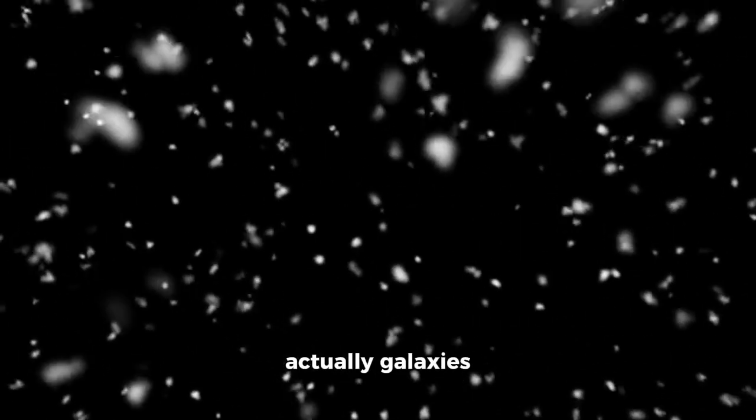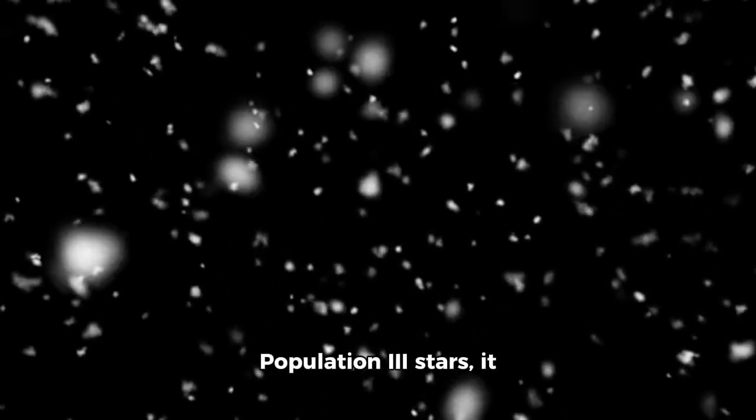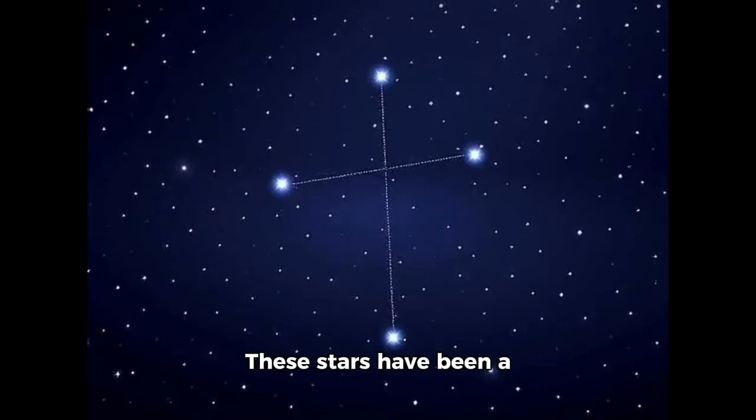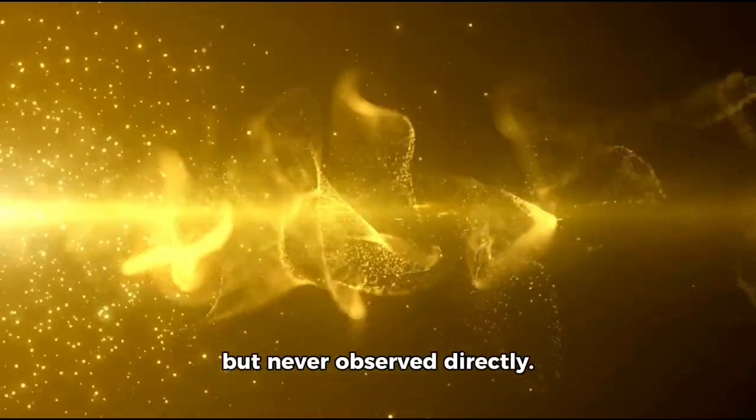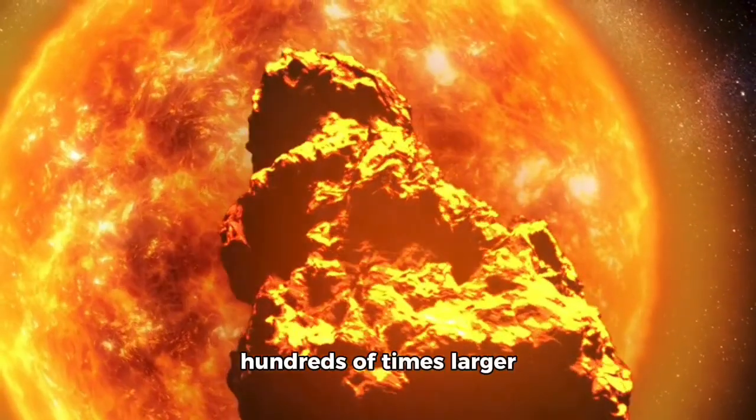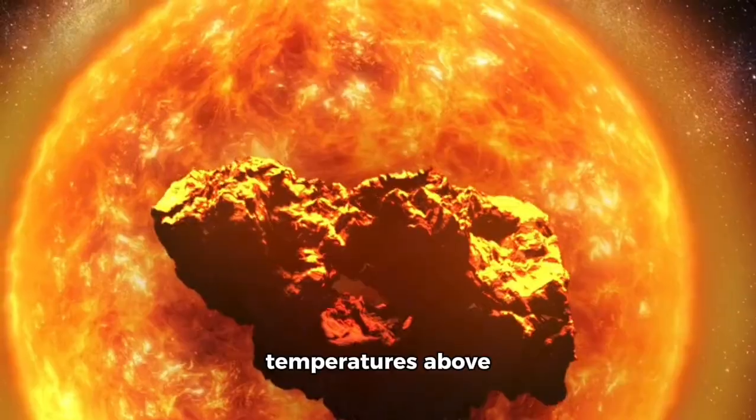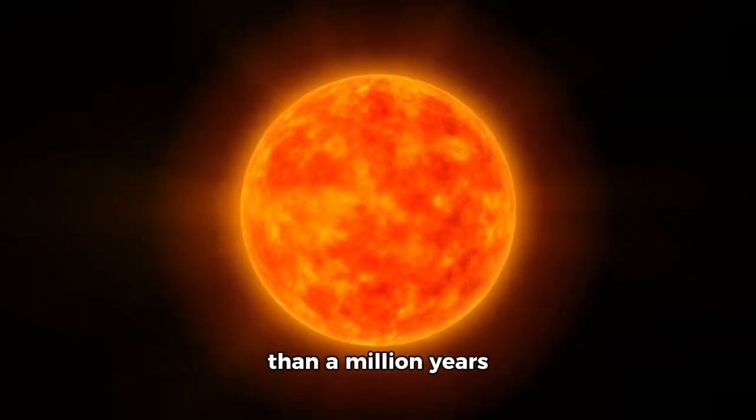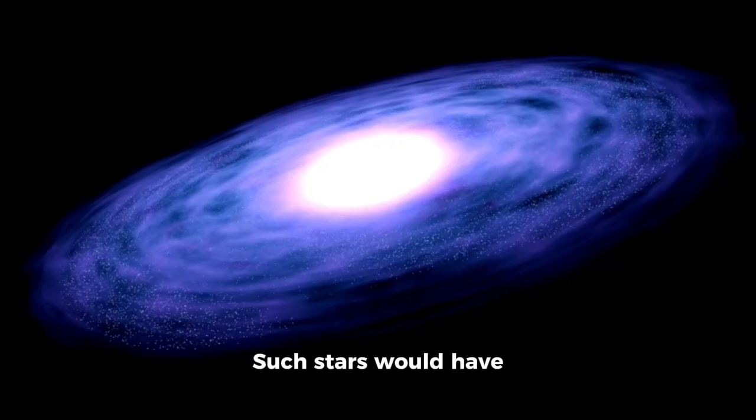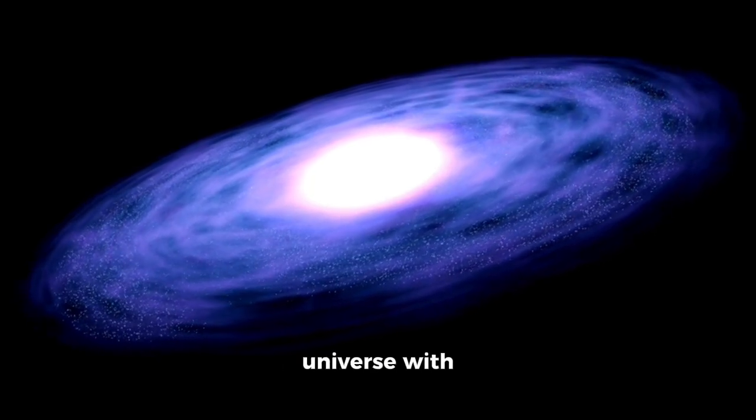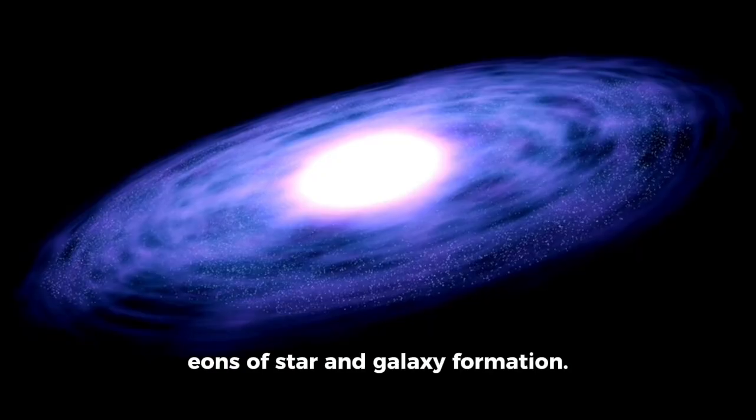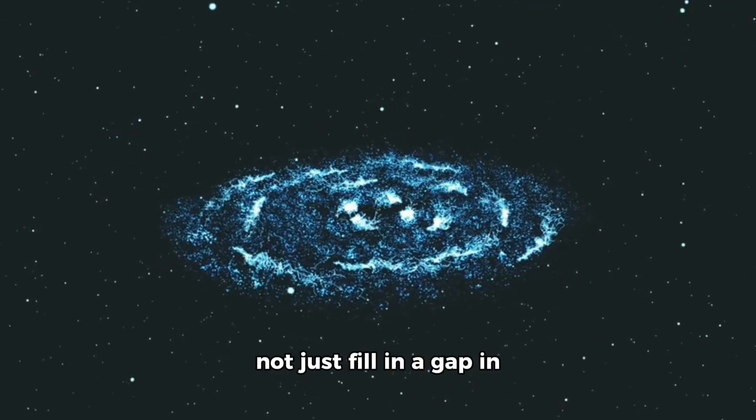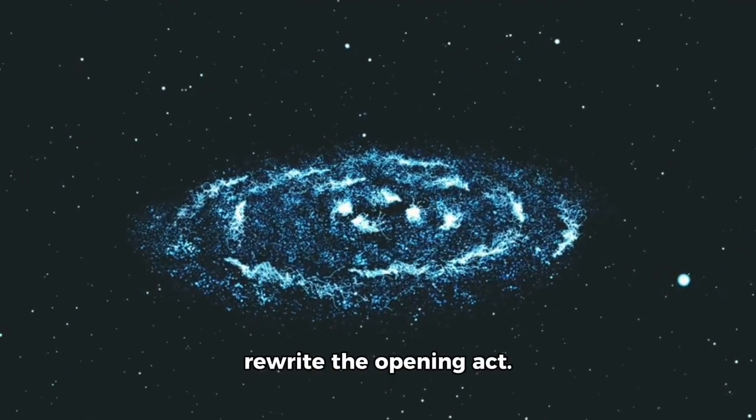If these objects are actually galaxies composed primarily of Population 3 stars, it would be one of the most significant advancements in modern astrophysics. These stars have been a theorized ghost, predicted by cosmology but never observed directly. It is believed they were hundreds of times larger than our sun, burning at temperatures above 50,000 degrees Celsius, living less than a million years before exploding in powerful supernovae. Such stars would have flooded the early universe with ultraviolet light, ionizing the surrounding gas and enabling later generations of star and galaxy formation.